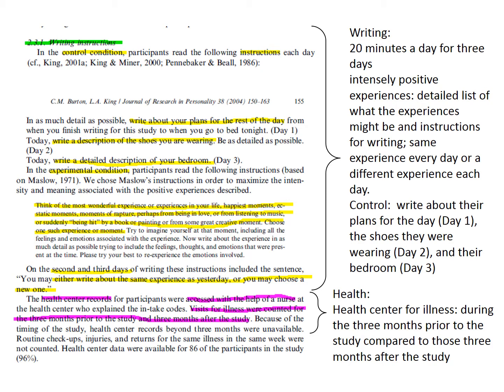The phrases 'participants read the following instructions' and 'experimental condition' help signal that the writing variable was manipulated. For the article summary, we can summarize the operational definition as shown in the slide. We know that health was the other variable of interest. Continuing to read, we can find the operational definition for health in the last paragraph of the writing instructions section, although it doesn't really fit with that heading. We can use the highlighted information from this slide to summarize the operational definition.